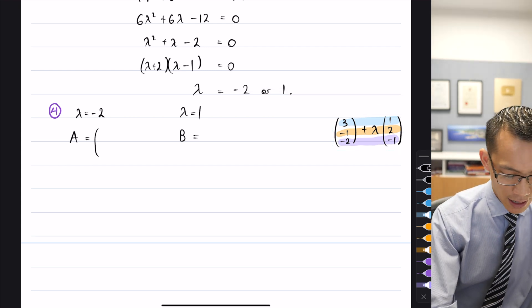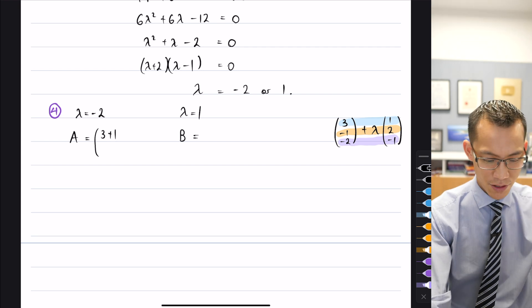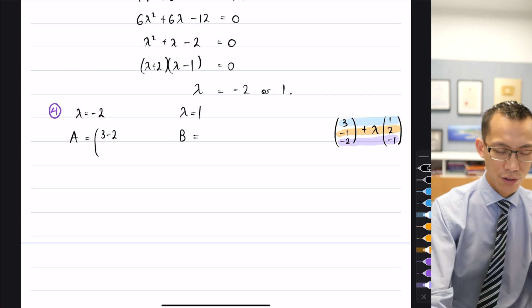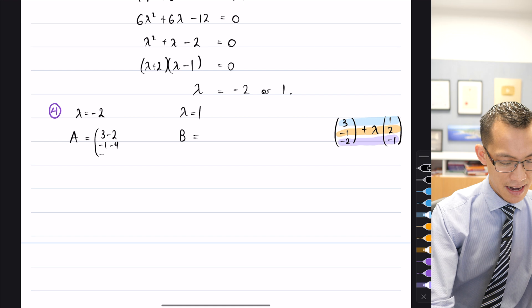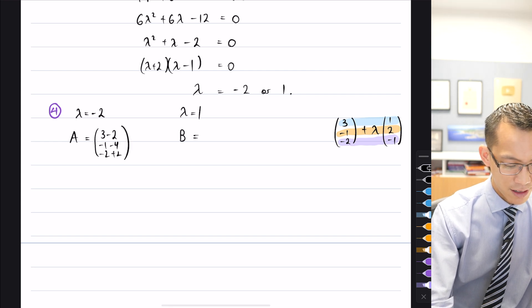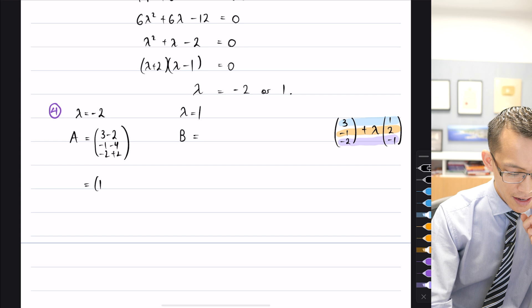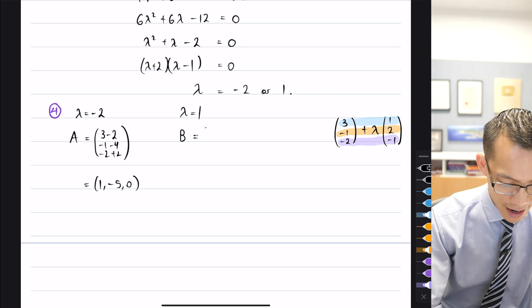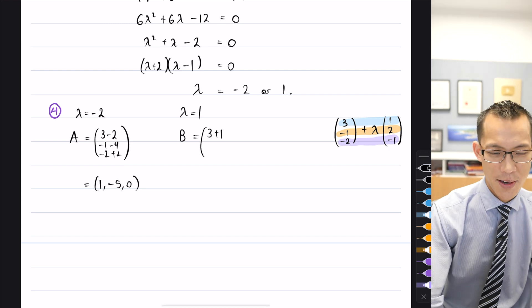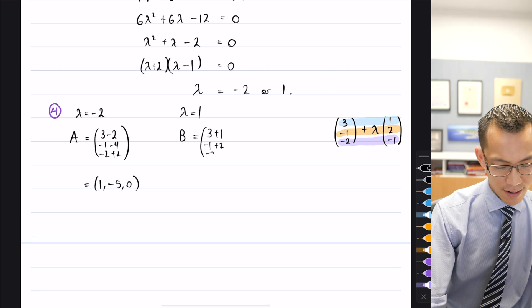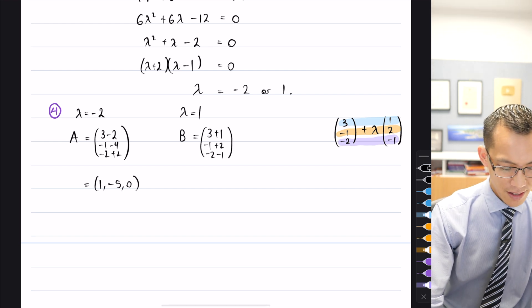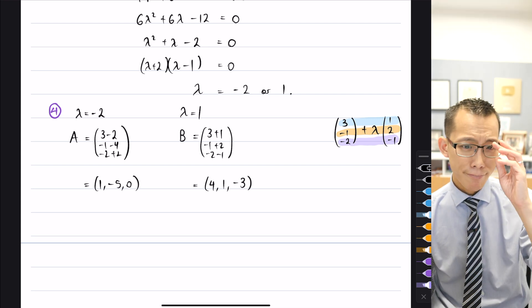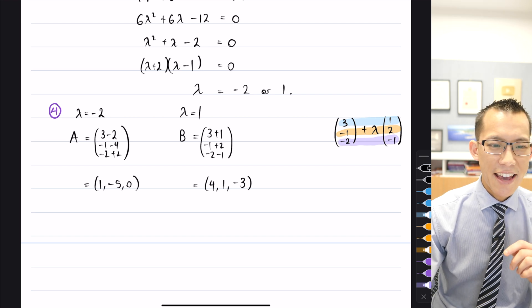So when you substitute in, can you see what I'm doing here? I'm going to get three plus one, cause I've substituted, wrong one, sorry. That's three, minus two. Is that right? Three minus two, negative one minus four, negative two plus two. How's that look? Yep. So here are my coordinates just by simplification. And then correspondingly, this is the one I accidentally started working out. This one is three plus one, negative one plus two, negative two minus one. So we've got coordinates for this as well. Is that okay?